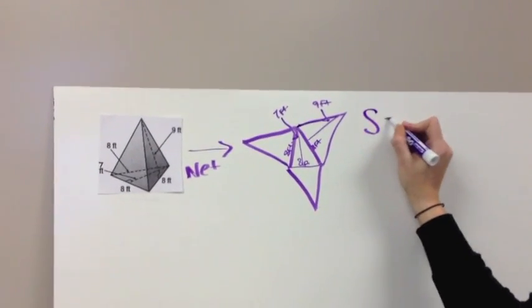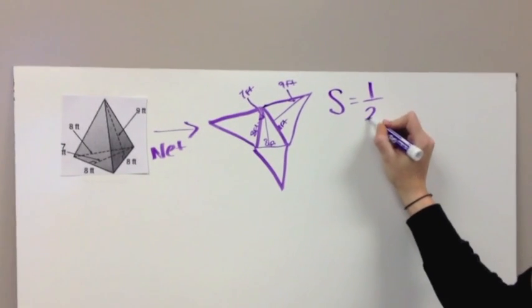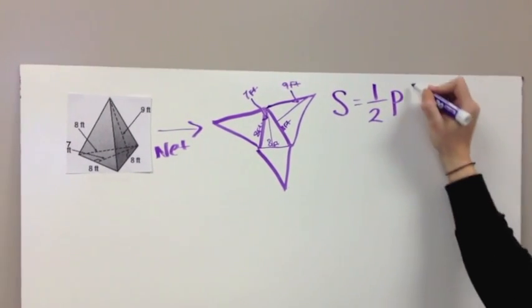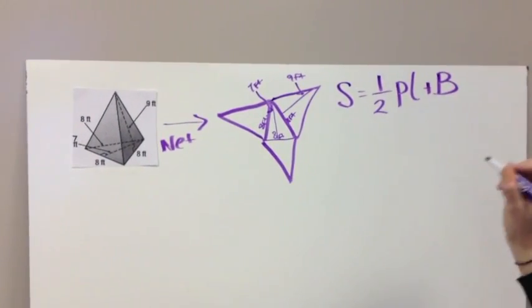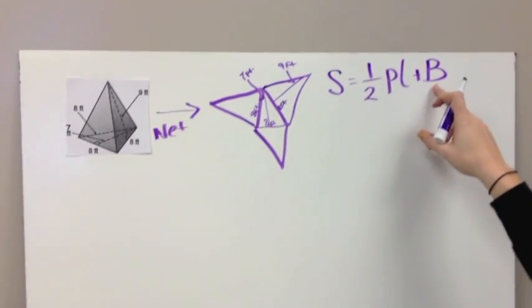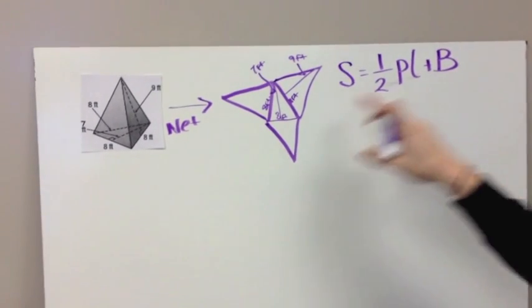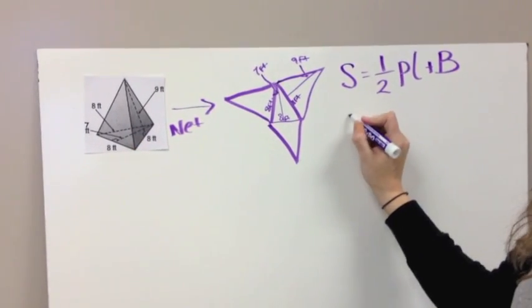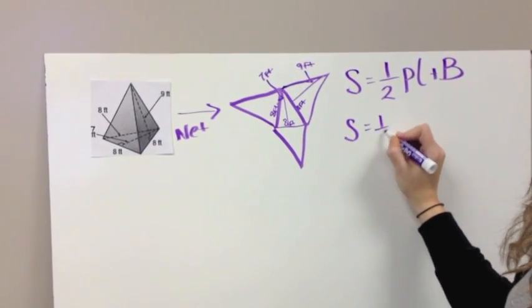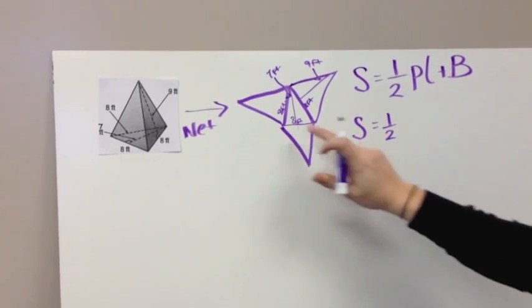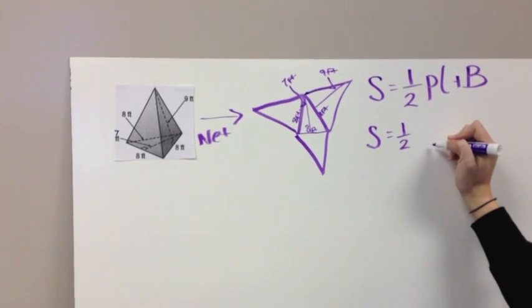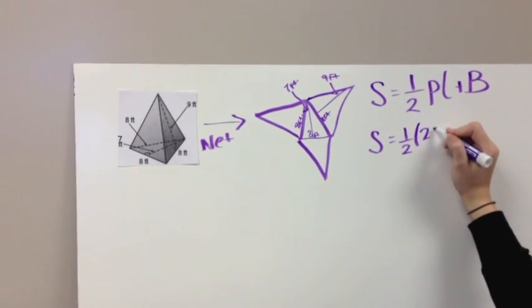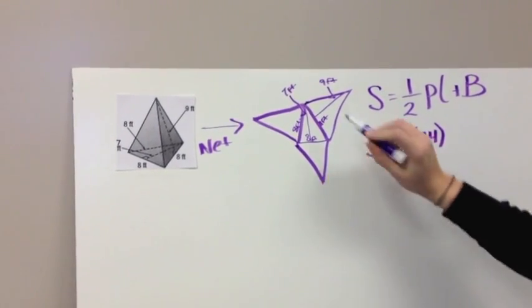So we have surface area equals 1 half times the perimeter of the base times the slant height plus the area of the base. That capital B, that's why it's capitalized, because that's the entire area of the base. So we have S equals 1 half. The perimeter of a triangle, let's just add all 3 eights together, and we get 24. The slant height.